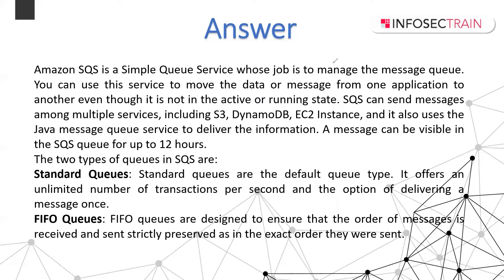The advantage of a decoupled structure is that if one part — either the producer or the consumer — fails, the application still works. For example, if the consumer part is not working, customers can still place orders. This way, the whole application will not go down. Benefits of SQS include: keeping sensitive data secure, reliably delivering messages, scaling elastically and cost-effectively, and eliminating administrative overhead.